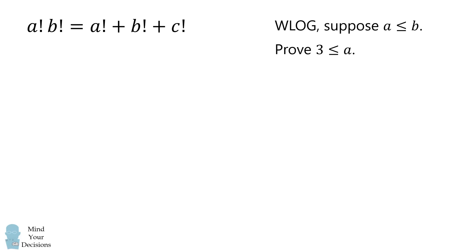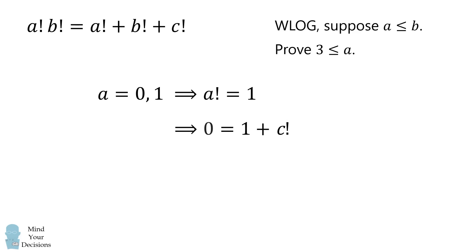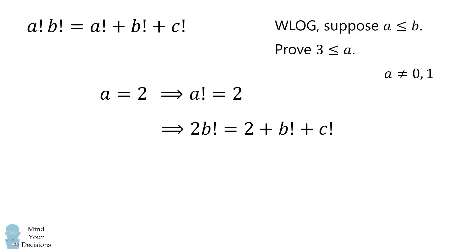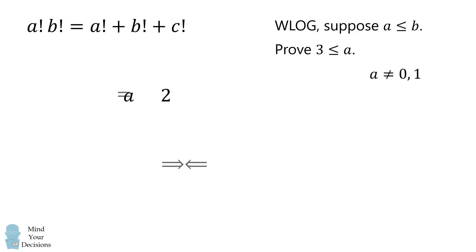Let's get started by working out a few cases. Suppose a is either 0 or 1 — then a factorial equals 1. Substituting into the original equation and simplifying, this only has a solution if 0 equals 1 plus c factorial, but no solution exists for positive integer c. Therefore a cannot be 0 or 1. We then consider a equals 2, so a factorial equals 2. Substituting and simplifying, there is no factorial that is 2 more than another factorial, since the factorial sequence goes 1, 2, 6, and so on. Therefore a cannot equal 2.